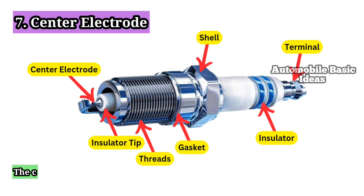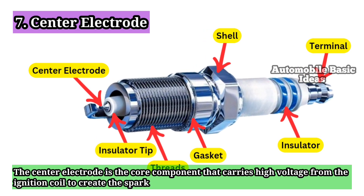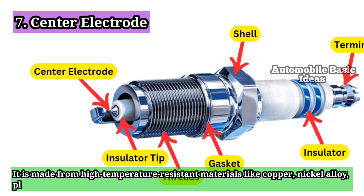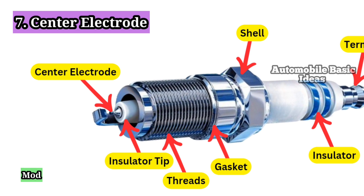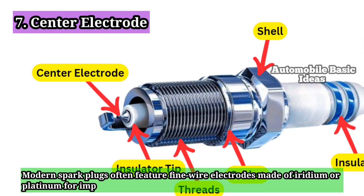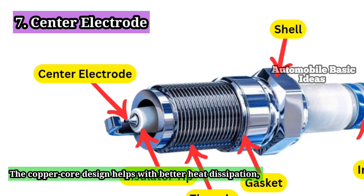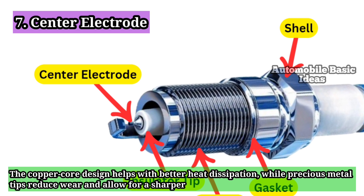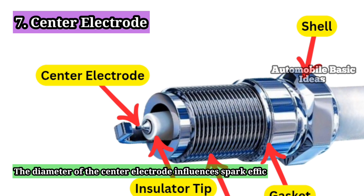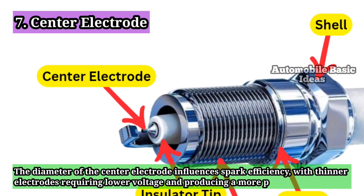7. Center Electrode. The center electrode is the core component that carries high voltage from the ignition coil to create the spark. It is made from high-temperature-resistant materials like copper, nickel alloy, platinum, or iridium. Modern spark plugs often feature fine wire electrodes made of iridium or platinum for improved durability and efficiency. The copper core design helps with better heat dissipation, while precious metal tips reduce wear and allow for a sharper, more consistent spark. The diameter of the center electrode influences spark efficiency, with thinner electrodes requiring lower voltage and producing a more precise ignition.